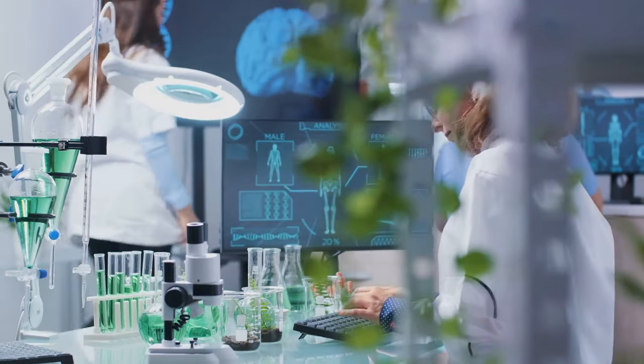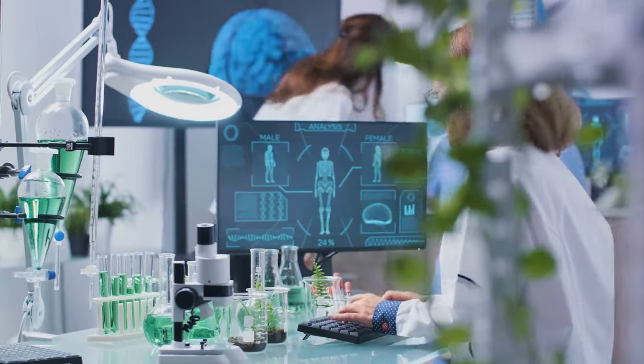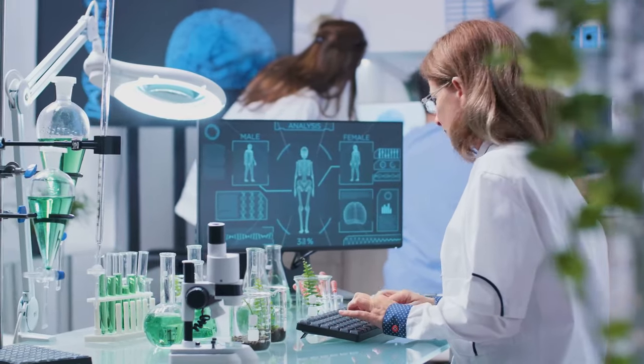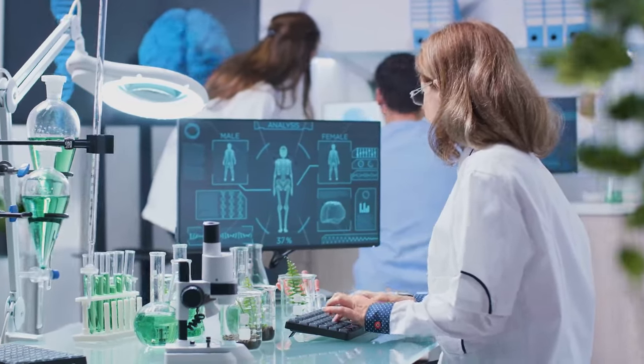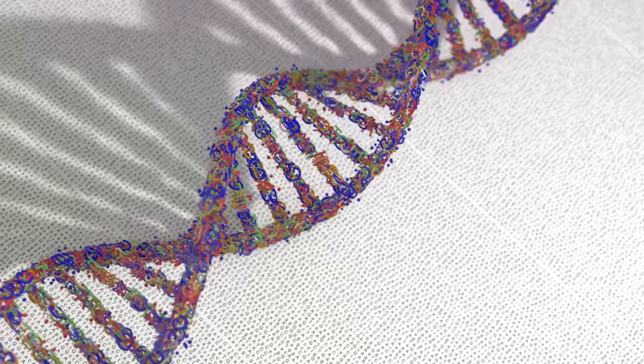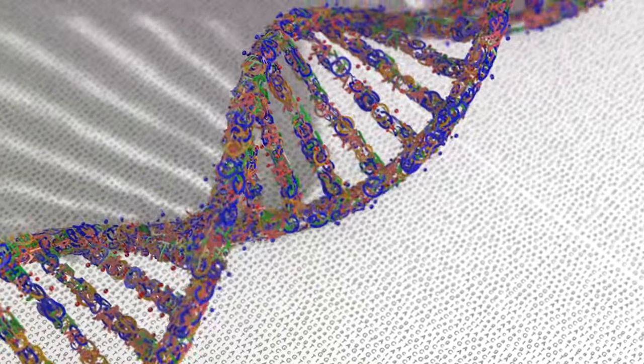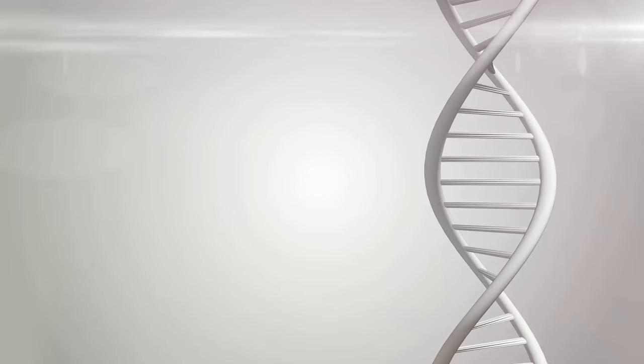This is why female calico cats, for example, have patches of different colors. Each color is the expression of an X-linked gene from either the mother or the father. So, the process of X-chromosome inactivation ensures a balance or dosage compensation between males and females. It's nature's way of ensuring that despite having two X-chromosomes, the gene dosage remains the same as in males, who have only one X-chromosome.